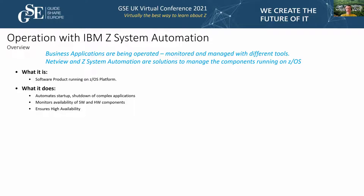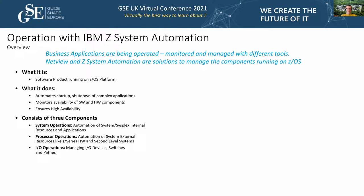Z System Automation is a software product running on z/OS platforms. It automates startup, shutdown, and complex applications — for example, if you have a solution with a database component, middleware, and an application server, all those pieces must be started in order and supervised. That's done not by humans but by System Automation, based on defined policies for what to supervise and how to react to different messages or situations.